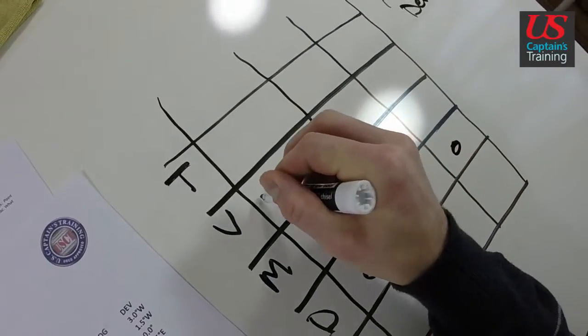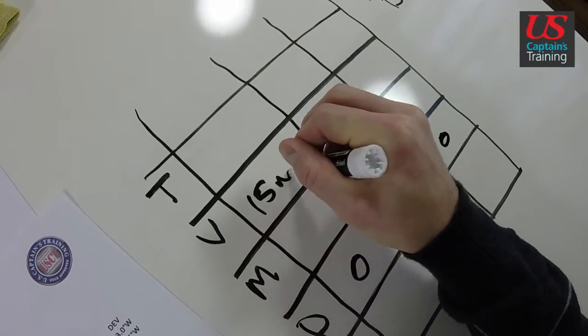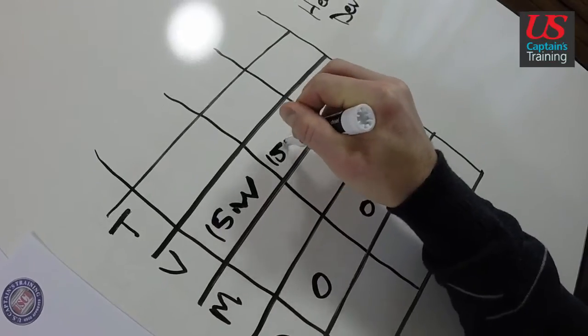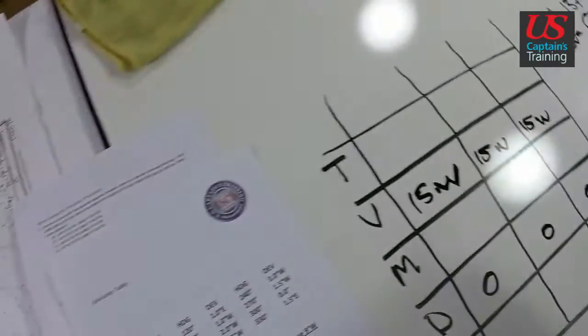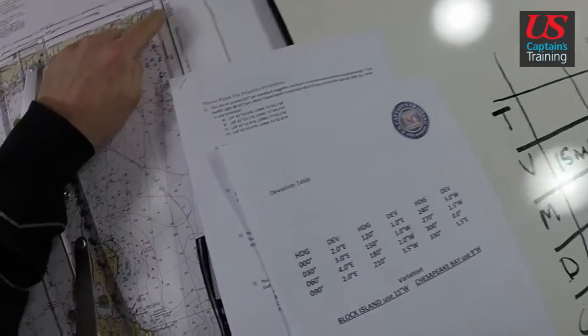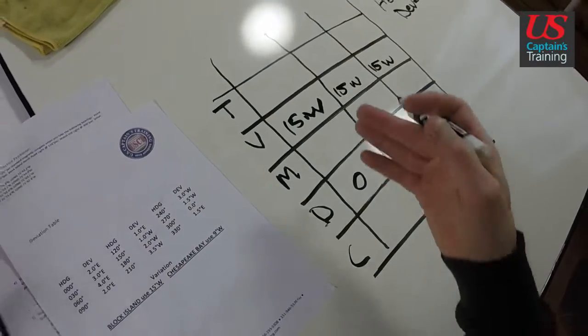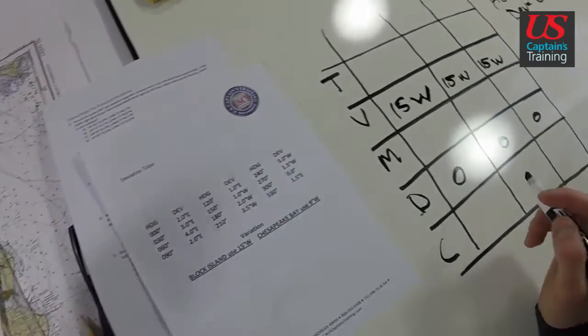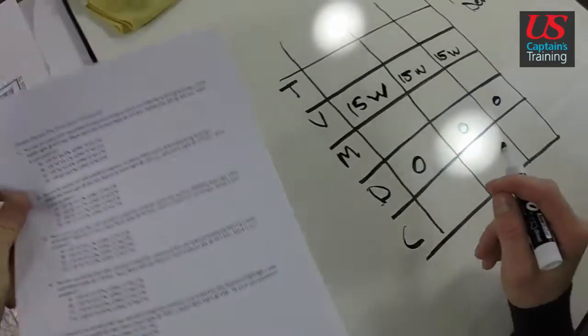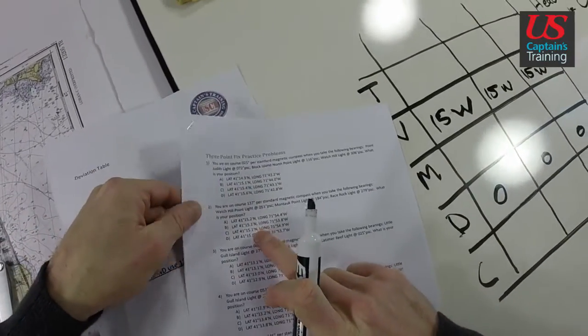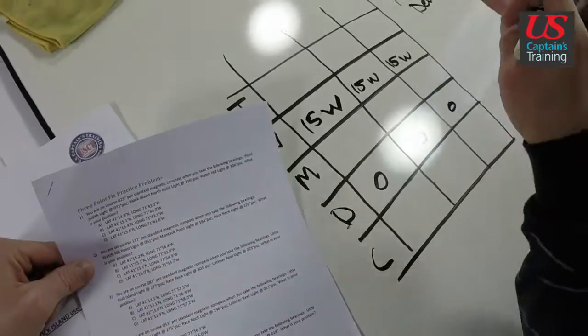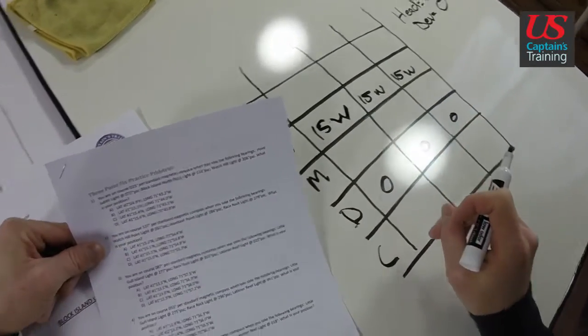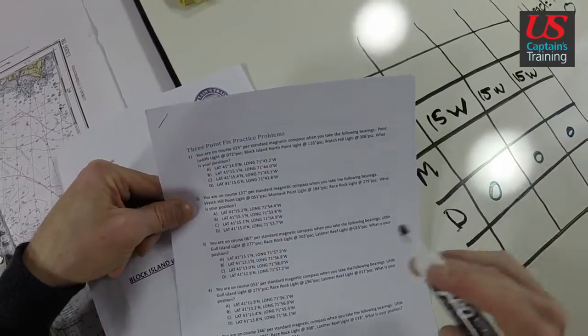At deviation of 0, we have a variation 15 west on our Block Island Sound and Approaches Chart 13205. We always use 15 west variation for this purpose of passing a Coast Guard exam. So we're on course 137. Good, we got that. We filled in deviation, we filled in variation, and we record our bearings.